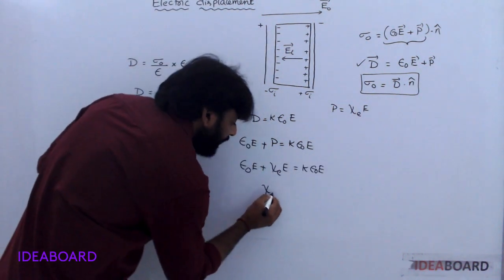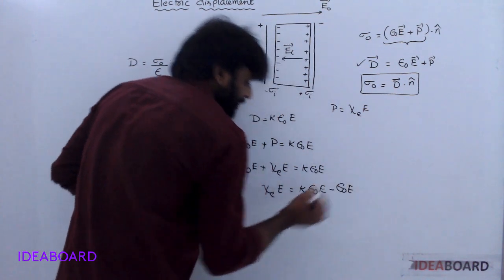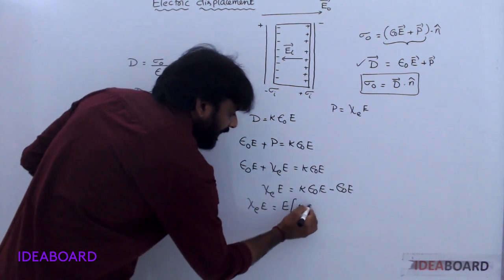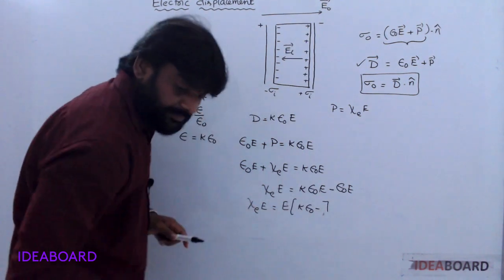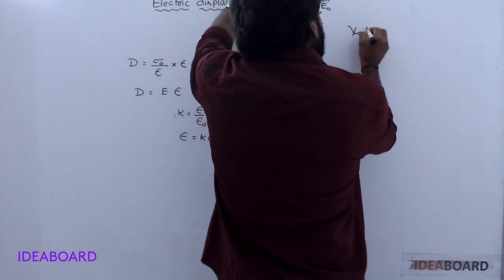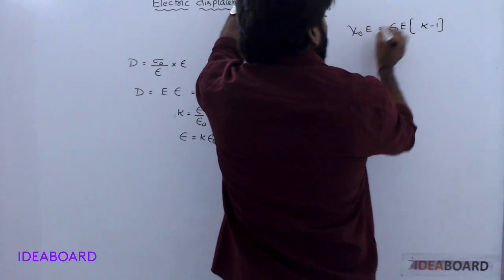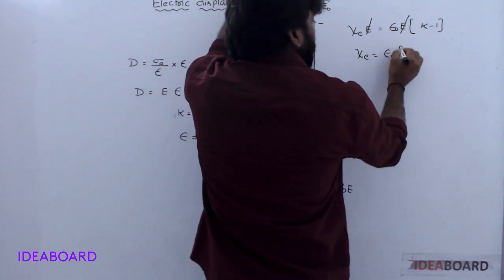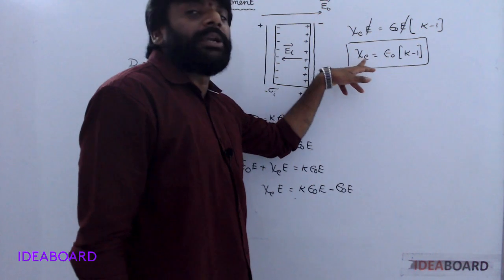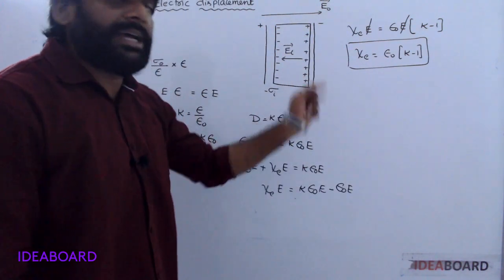Rearranging: P equals k epsilon-naught E minus epsilon-naught E. Taking epsilon-naught E as common: P equals epsilon-naught E times (k minus 1). Therefore chi equals epsilon-naught times (k minus 1). The electric susceptibility of the dielectric equals the free space permittivity times (dielectric constant minus 1).